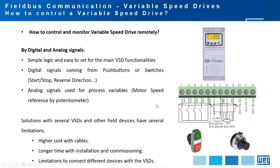To start, it's important to understand how we can control a variable speed drive remotely. Probably you think about digital and analog signals, as this is the easy way — a simple logic easy to set with most variable speed drives, using simple devices like push buttons, switches, and analog signals such as a potentiometer installed close to the drive. However, with digital and analog signals we don't have access to all parameter settings, and there are several limitations when multiple variable speed drives are installed in a cabinet, machine, or process.